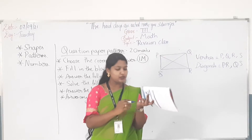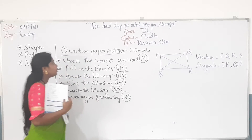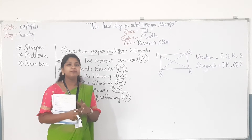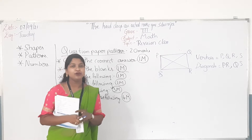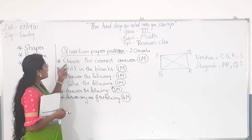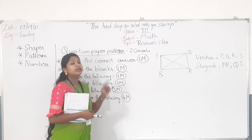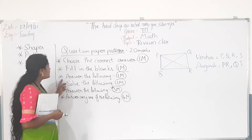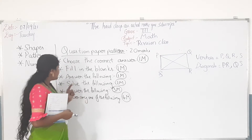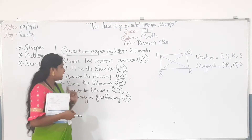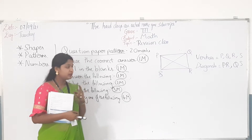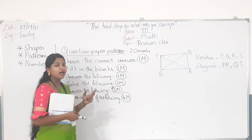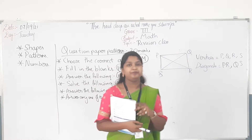Students, just see the pattern of your question paper. You will be having a 20 marks question paper to write and 5 marks oral. So totally you will be having 25 marks for your test. The pattern will be: first, choose the correct answer — one mark each; fill in the blanks — one mark each; answer the following — one mark questions; solve the following — two marks each; answer the following — three marks each; and answer any one of the following — four marks, where they give two questions and you answer any one.